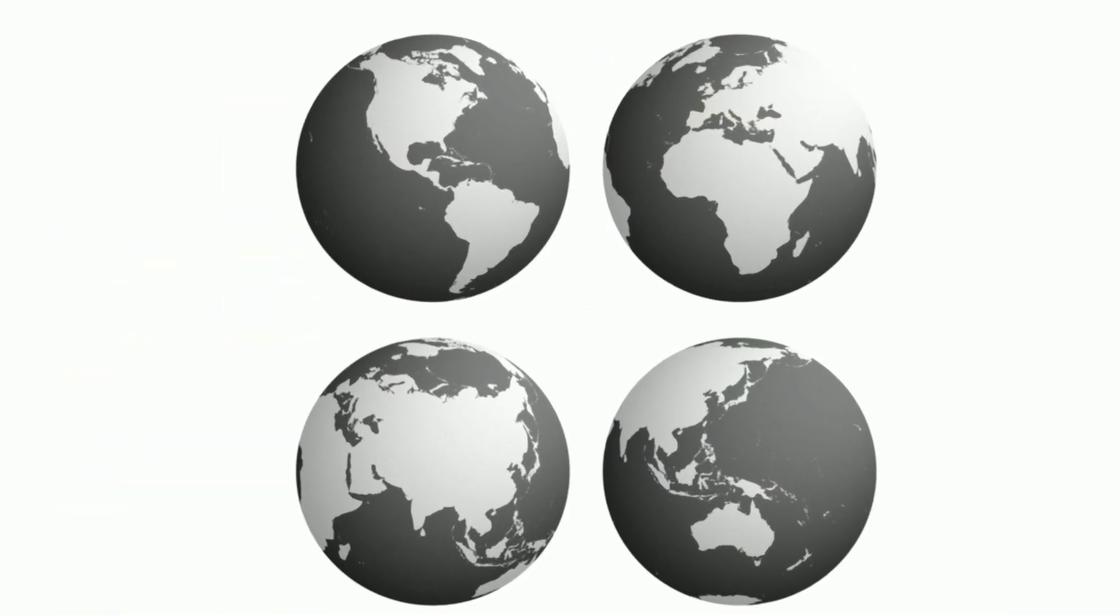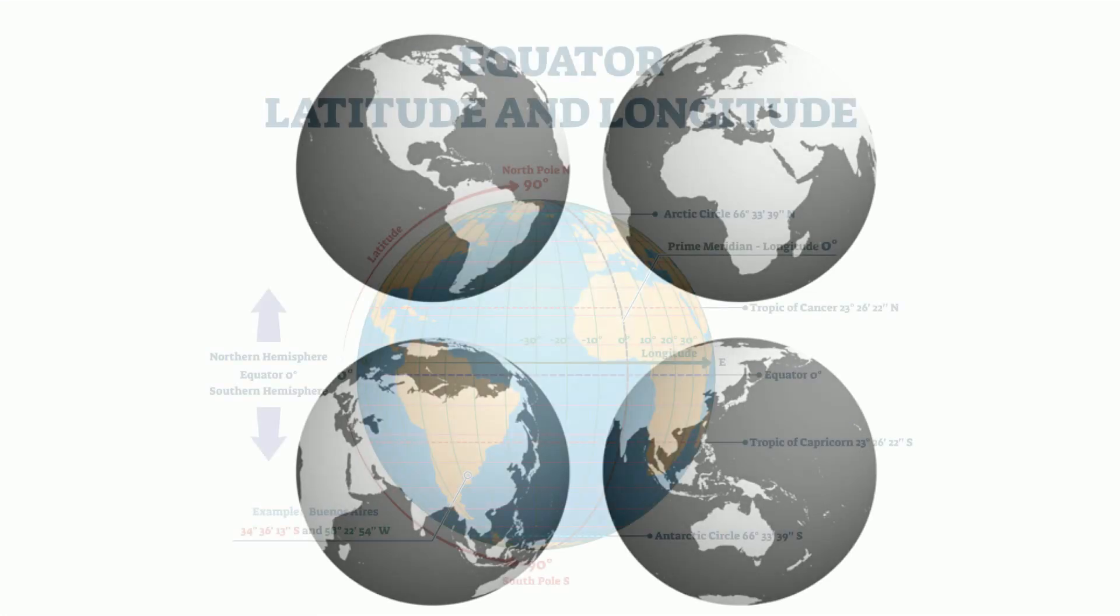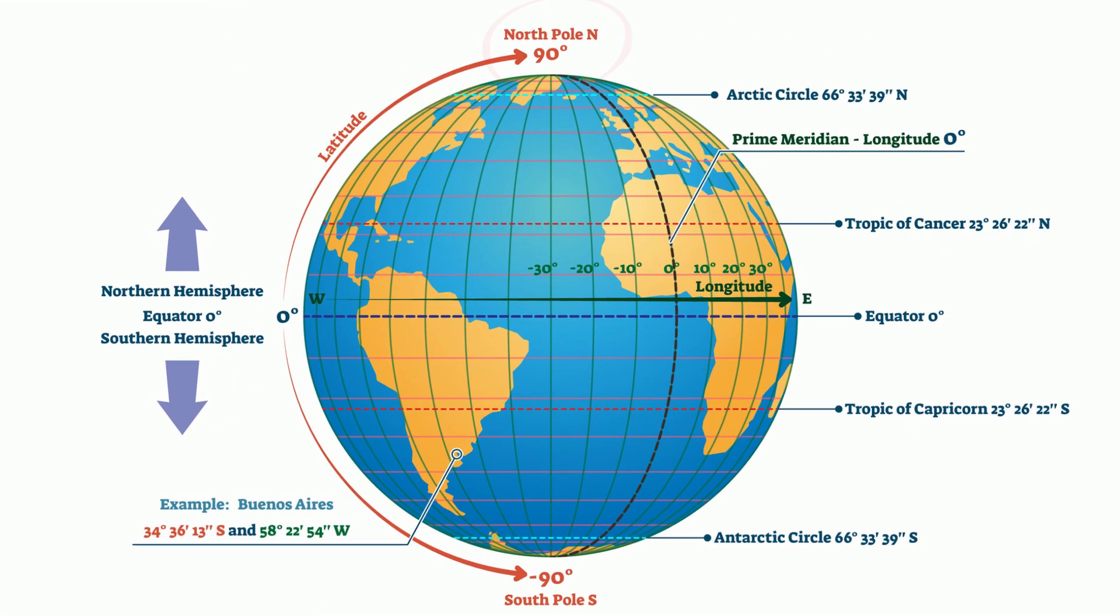The world can be divided in half two different ways. First, you can divide the world into northern and southern halves. The imaginary line that runs all the way around the world and divides it into two equal halves is called the equator.